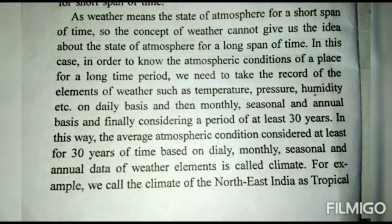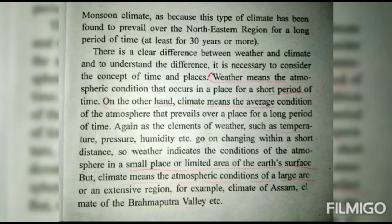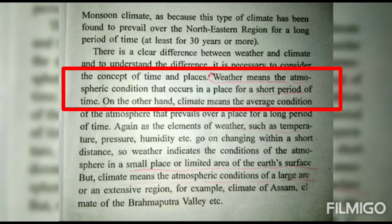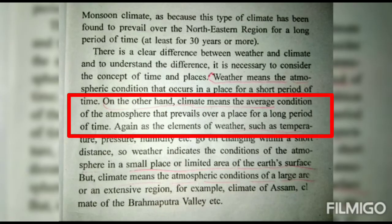The normal pattern of weather experienced in a particular area over a long period of time is known as climate. For example, we call the climate of northeast India a tropical monsoon climate, because this type of climate has prevailed over the region for at least 30 years. The climate of a place stays the same year after year — for example, the climate of Antarctica is extremely cold. Weather refers to atmospheric conditions over a short period of time; climate refers to the average atmospheric condition over a long period of time.